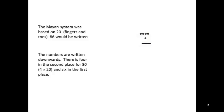The Mayan system was based on 20 fingers and toes. So 86 would be written with the Mayan system down, so the top place is the second place, the number of 20s. The bottom place, the six, is the number of ones. So this number would be read as four times twenty plus six for a total of 86.